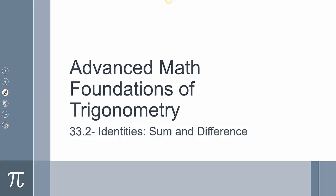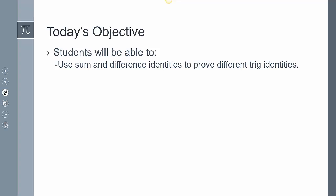Today it's going to be section 33-2 and we're going to take a look at sum and difference identities. Today we're actually going to focus on using those sum and difference identities to prove different trig identities.